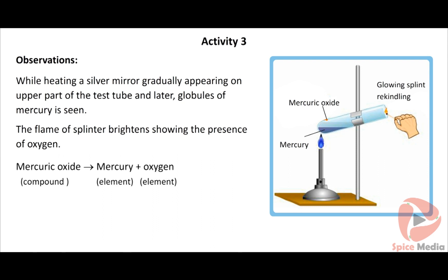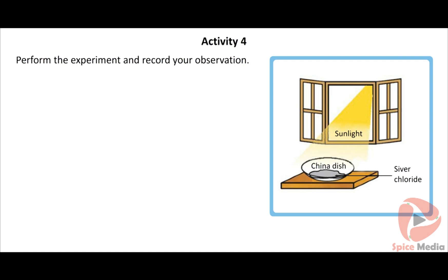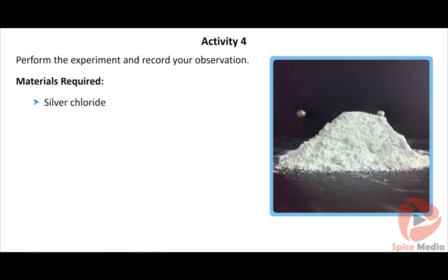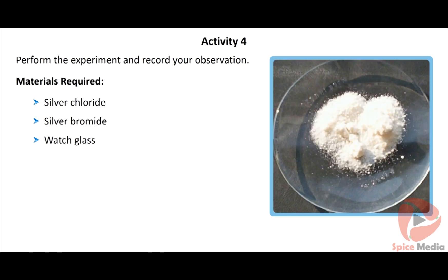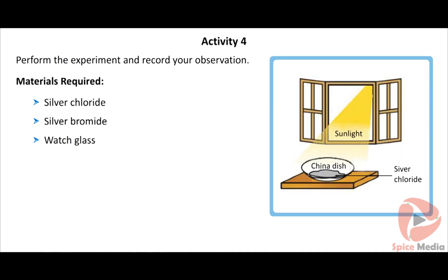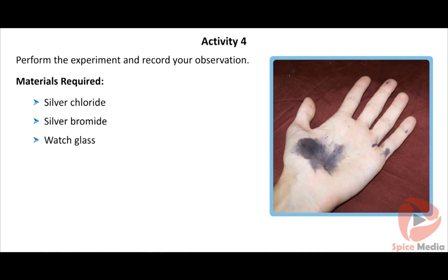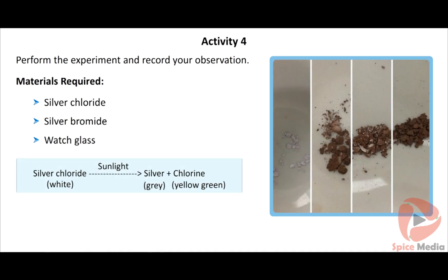Mercuric oxide when heated undergoes thermal decomposition to give mercury and oxygen. Perform the experiment and record your observation. Materials required: Silver chloride, silver bromide, watch glass. Procedure: Take a small amount of crystals of silver chloride on a watch glass. Note its color. Place this watch glass under sunlight for some time. Observe the color of silver chloride after some time. Repeat the same procedure with silver bromide. White silver chloride turns grey in sunlight. This is due to the decomposition of silver chloride into silver and chlorine by light. Light yellow silver bromide turns grey in sunlight. This is due to the decomposition of silver bromide into silver and bromide by light.